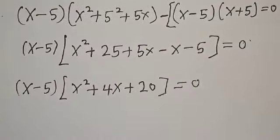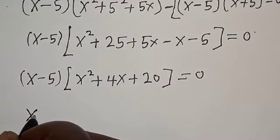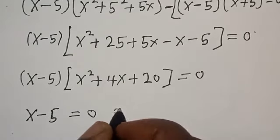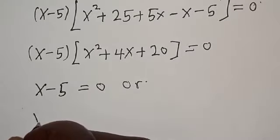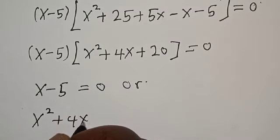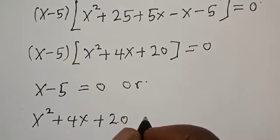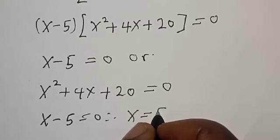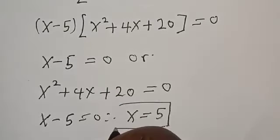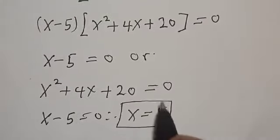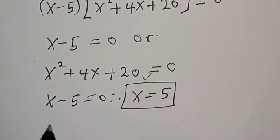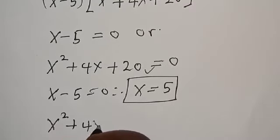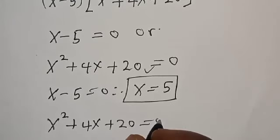We now have two cases: either x minus 5 equals 0, or x squared plus 4x plus 20 equals 0. From the first case, x minus 5 equals 0, we get x equals 5.